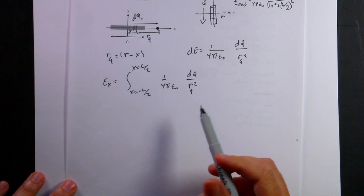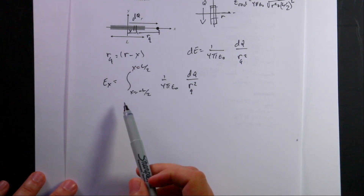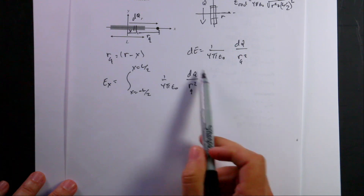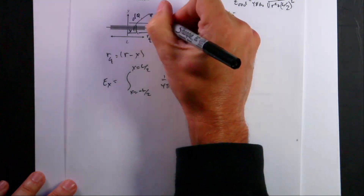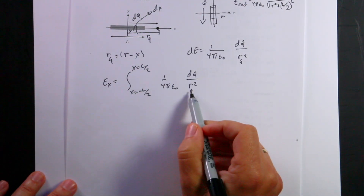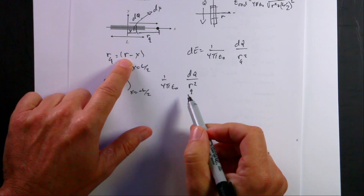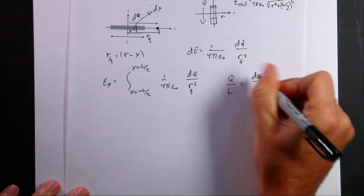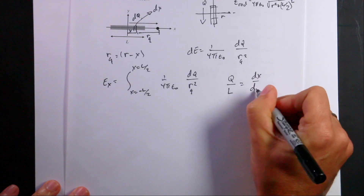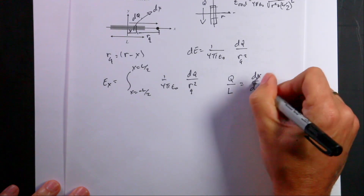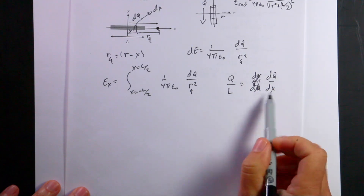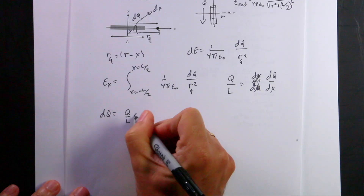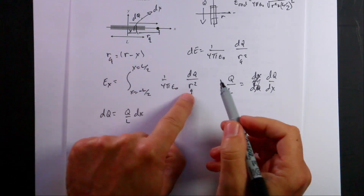I can't integrate that yet for two reasons: the limits are along x but x doesn't appear in the integrand, and the integration variable is dq rather than dx. So I need to convert dq to dx. The total charge over total length equals dq over dx, giving dq = (Q/L) dx. Substituting in, I get Ex = (1/4π epsilon-naught) × (Q/L) × integral from −L/2 to L/2 of dx / (r − x)².